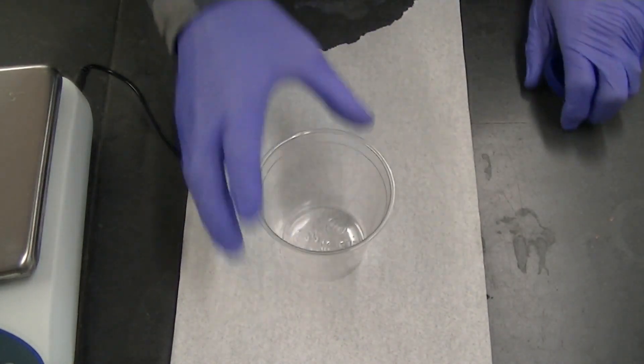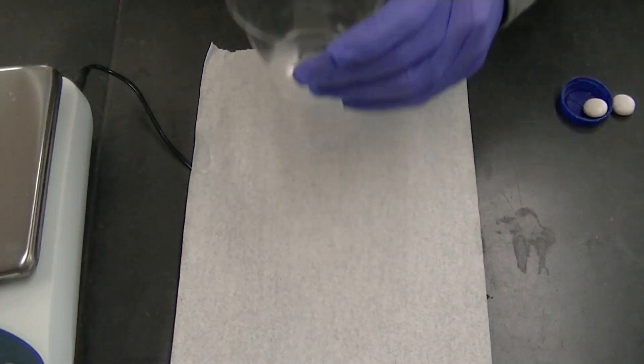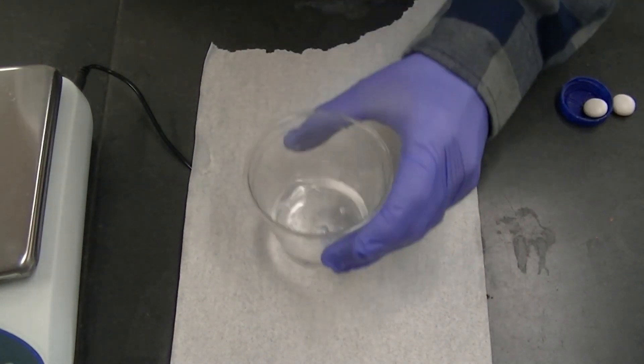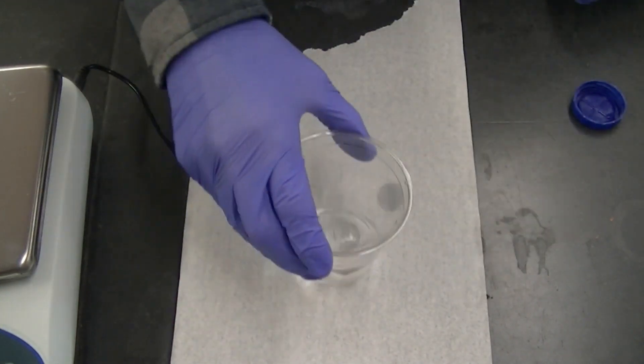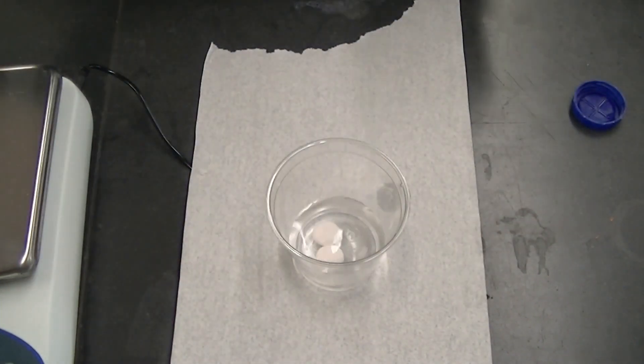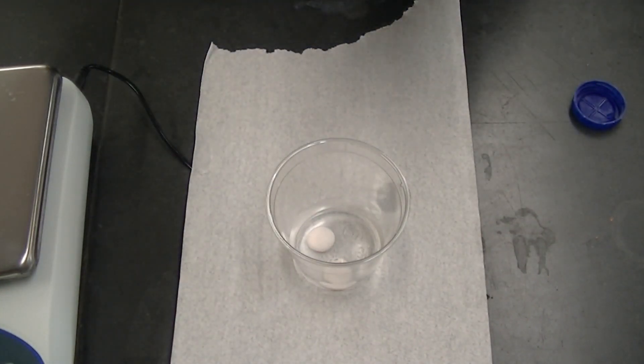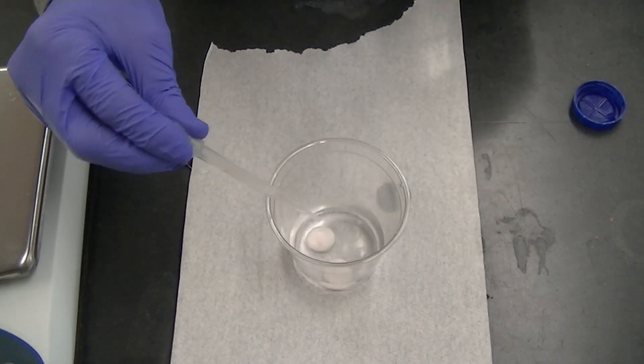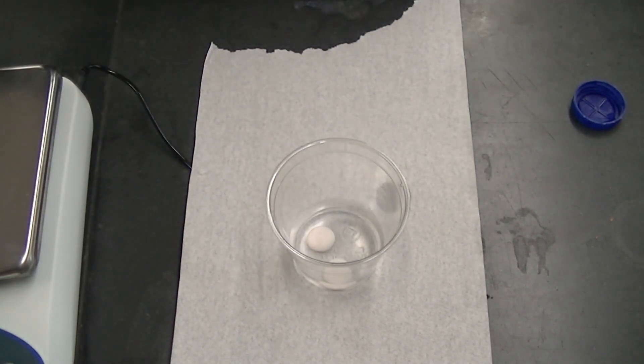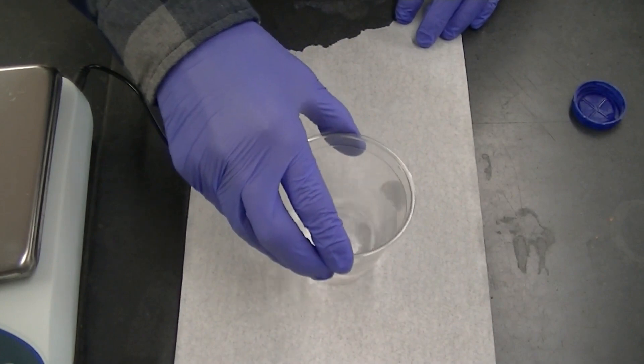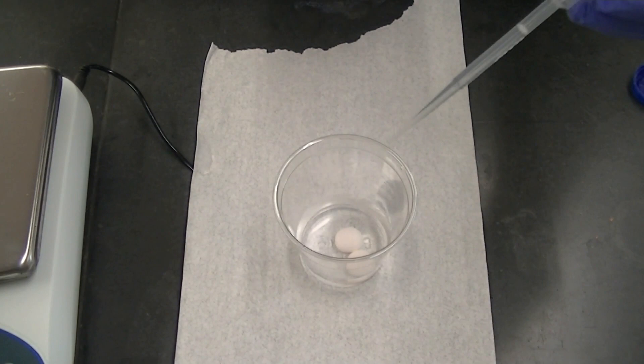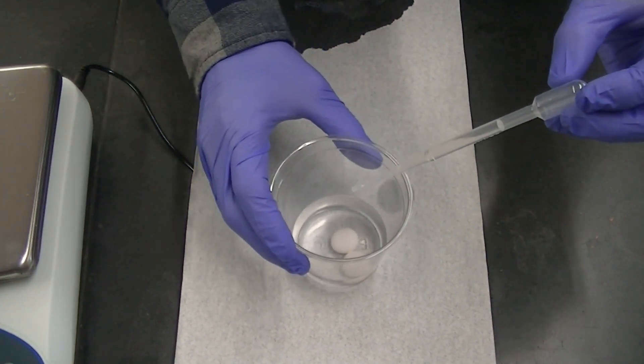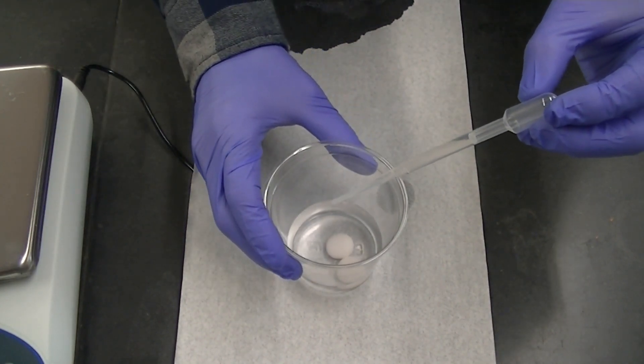Now as a control, we're just going to take some deionized water and I'm going to add some Mentos candies to it. We'll add a squirt of thymolphthalein. And let's see how many drops of base it takes to make the blue color appear with the deionized water to which Mentos candies have been added.